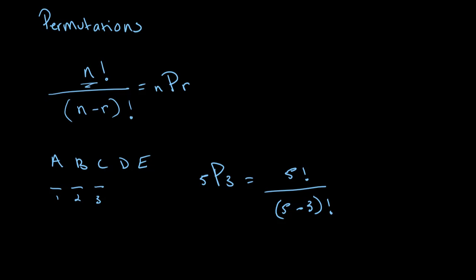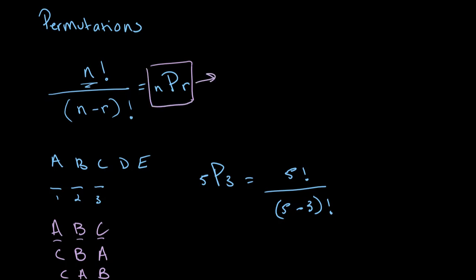Another thing you should note regarding permutations is that the order in which the objects are arranged matters. For example, having A, B, and C sitting is considered different from having C, B, and A sitting, or even C, A, and B sitting. While the same 3 people are sitting, it matters what chair they are in. So permutations are applied when order matters.